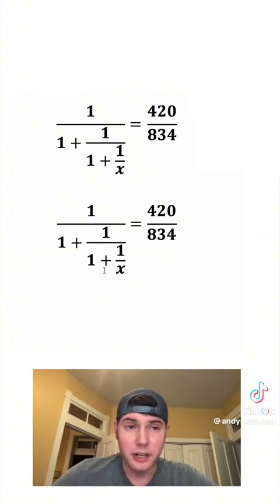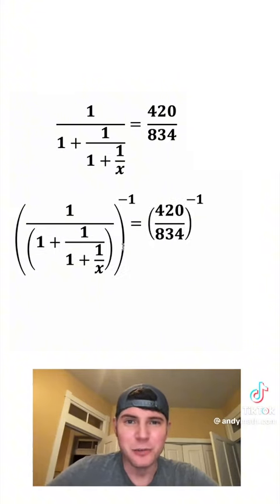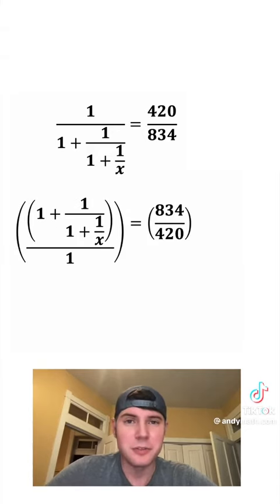Let's group all this stuff in the denominator with parentheses. And then let's do both sides to the negative 1 power. Ultimately, this means taking the reciprocal. So this 420 over 834 is going to become 834 over 420. And this right here will also be flipped upside down. And anything over 1 is just that anything.